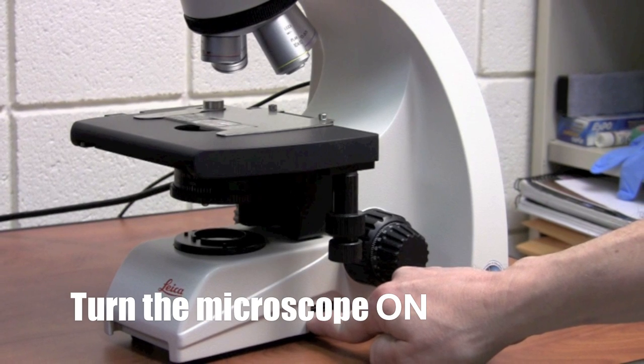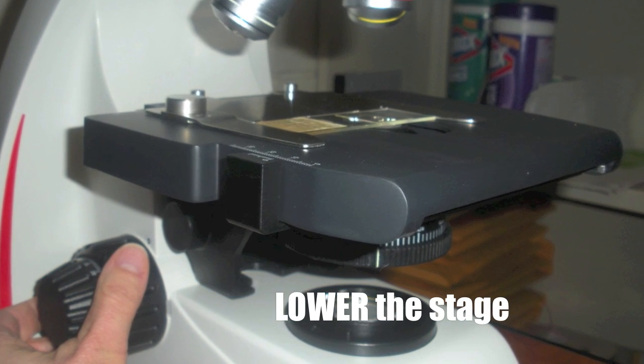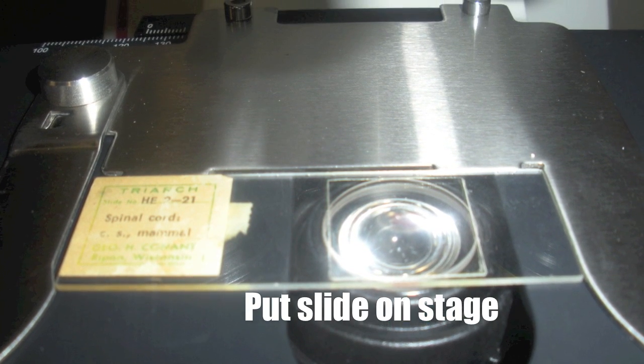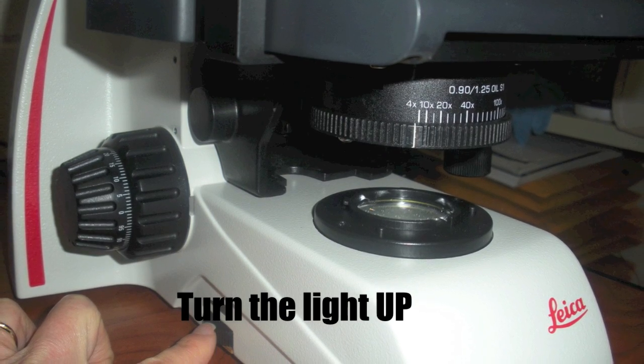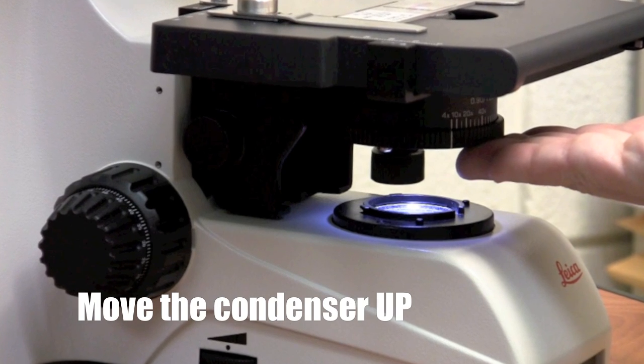Turn the microscope on. Lower the stage. Place your slide on the stage. Turn the light all the way up. Move the condenser all the way up.